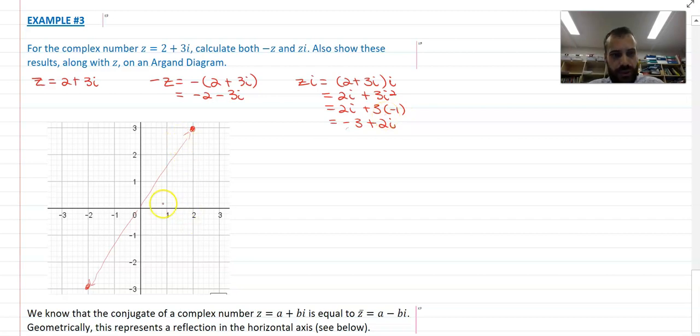Now, this has the effect of swapping the real component and the imaginary component and rotating our dot 90 degrees anticlockwise. So, very interesting thing.